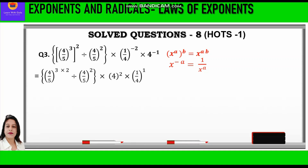Applying these laws, we write 4 by 5 raised to power 3 into 2, divided by 4 by 5 raised to power 2. Then 1 by 4 becomes 4 raised to power 2, and 4 raised to power minus 1 becomes 1 by 4 raised to power 1. In the curly bracket we have a division sign, so we apply x raised to power a divided by x raised to power b equals x raised to power a minus b. We write 4 by 5 raised to power 6 minus 2, giving 4 by 5 raised to power 4.